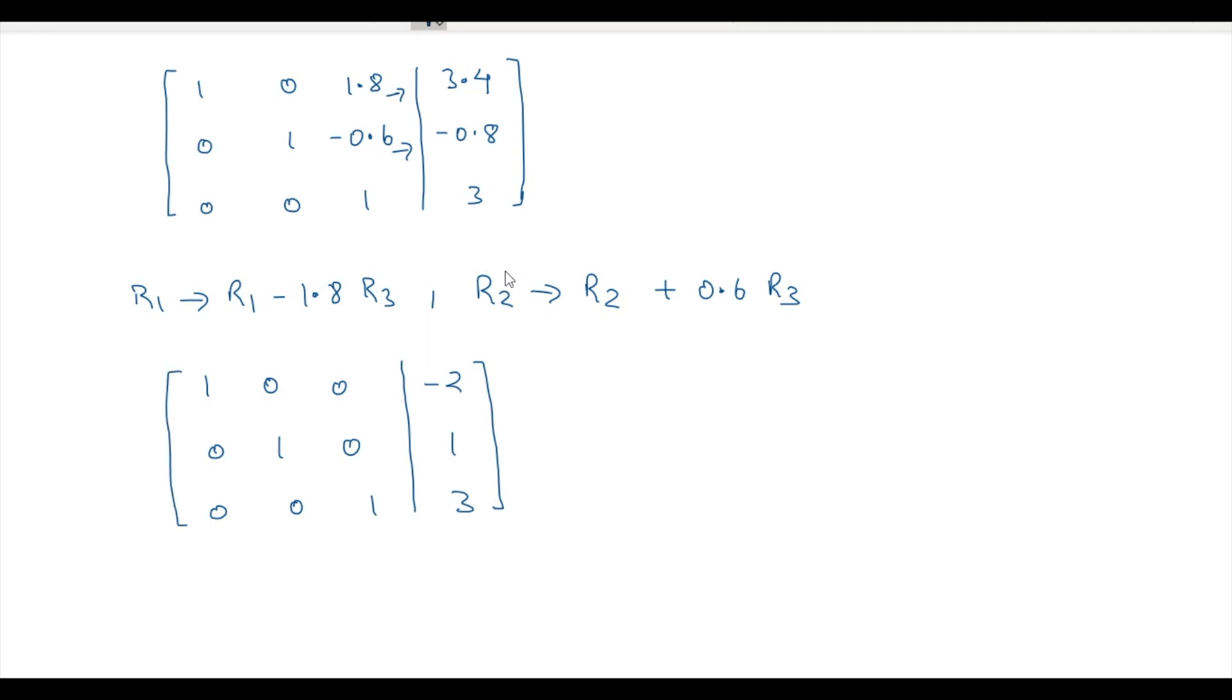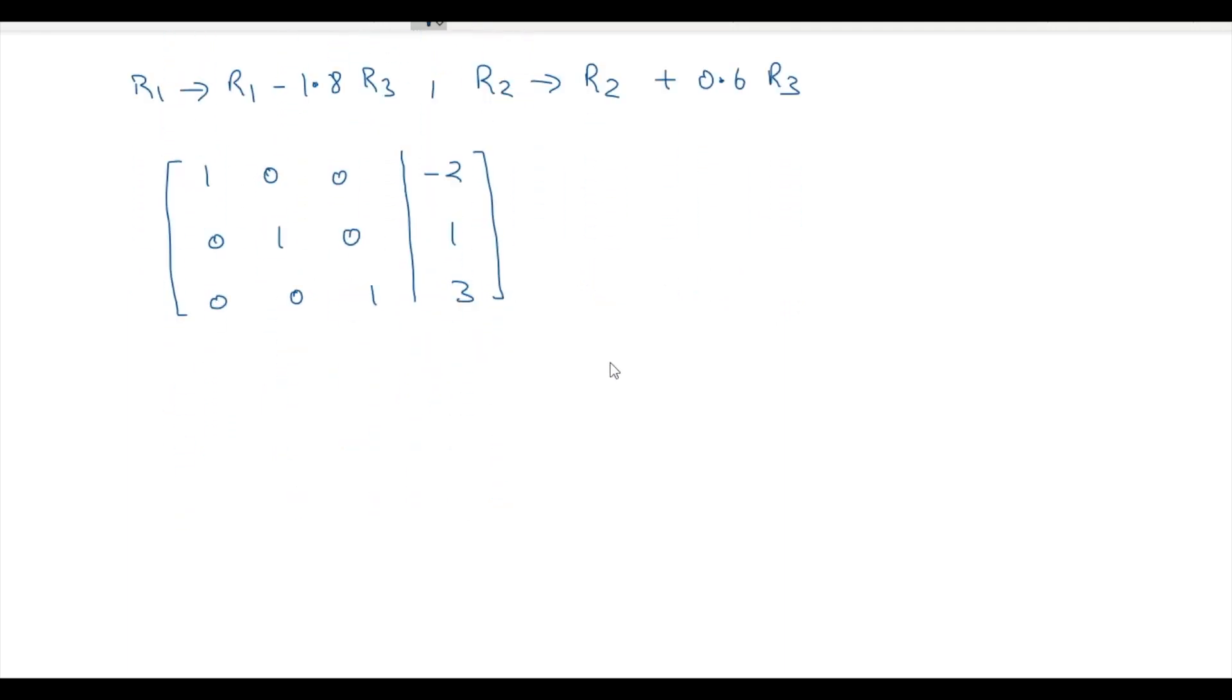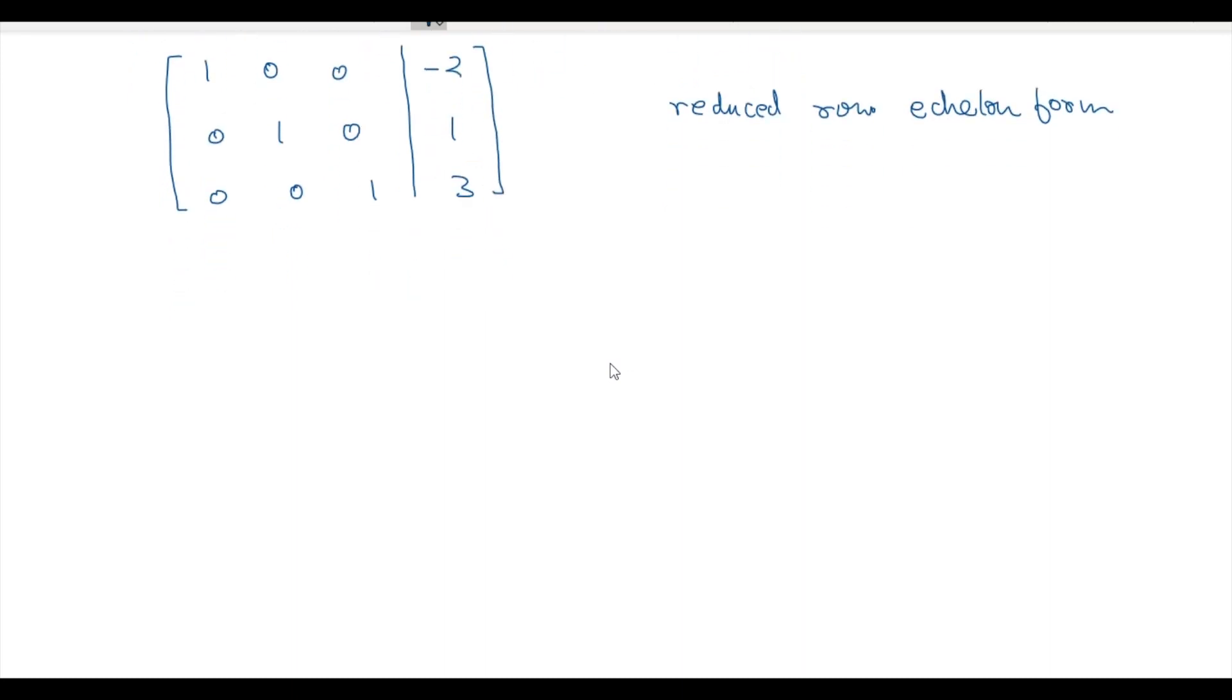So this is the result we are getting after all such row operations and this is the reduced row echelon form. From here we can clearly see that x will be equal to minus 2, y will be equal to 1 and z will be equal to 3.